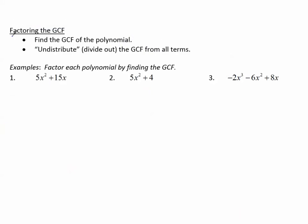Let's start with factoring the GCF, the greatest common factor. First, we'll find the GCF of the polynomial. Then, we'll undistribute, or divide out, the GCF from all the terms.